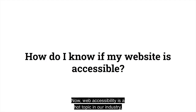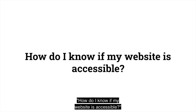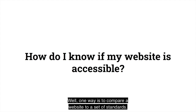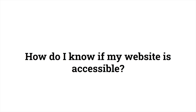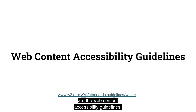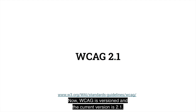Web accessibility is a hot topic in our industry, and a lot of people are asking the question: how do I know if my website is accessible? Well, one way is to compare our website to a set of standards. And the standards that most people use are the Web Content Accessibility Guidelines, or WCAG for short. Now, WCAG is versioned, and the current version is 2.1.